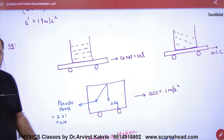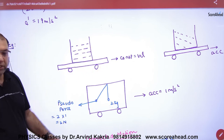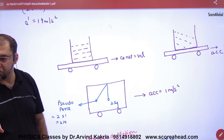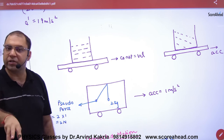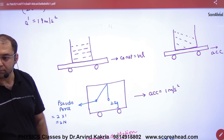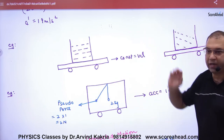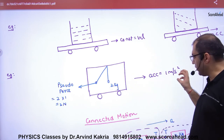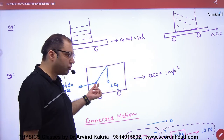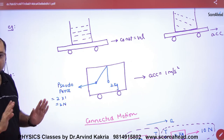In pseudoforce — suppose you have a vessel of water on a trolley running at constant velocity. That frame is inertial, acceleration is zero, so no pseudoforce. The water stays level. But if the trolley is accelerating, pseudoforce acts in the opposite direction on the water, and the water surface tilts backward. For example, if a string pulls the trolley and it accelerates at 1 m/s², the pseudoforce on a 2 kg bob is 2 × 1 = 2 N in the backward direction.